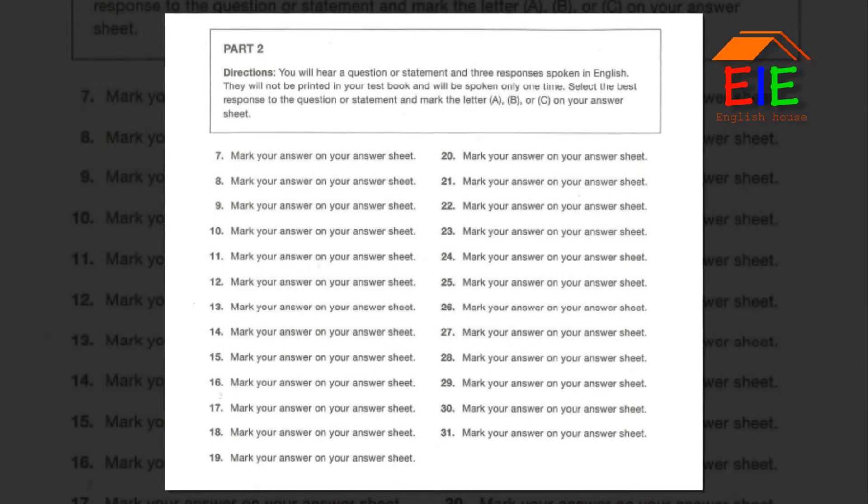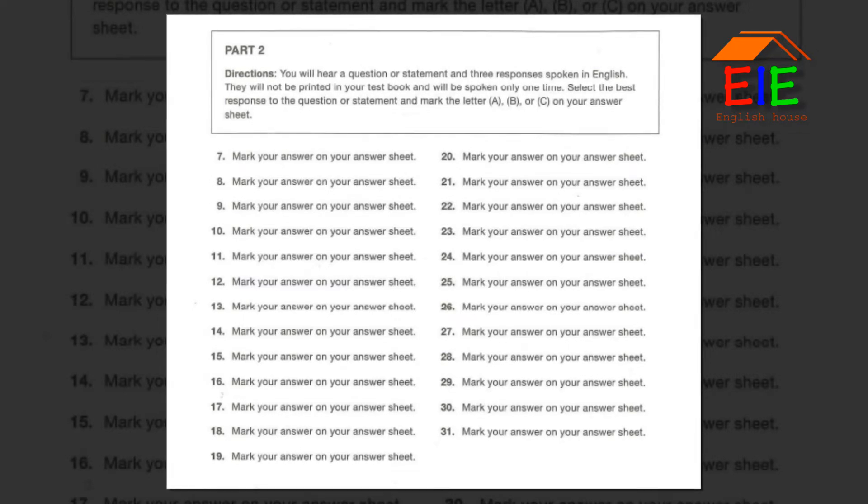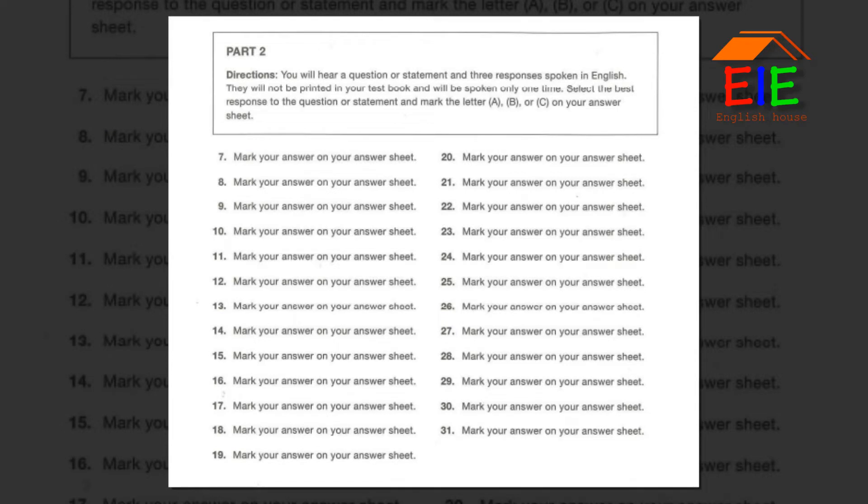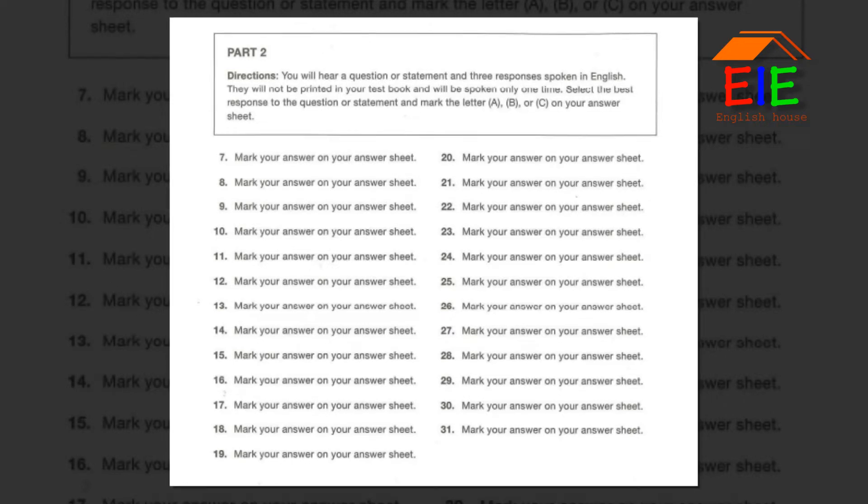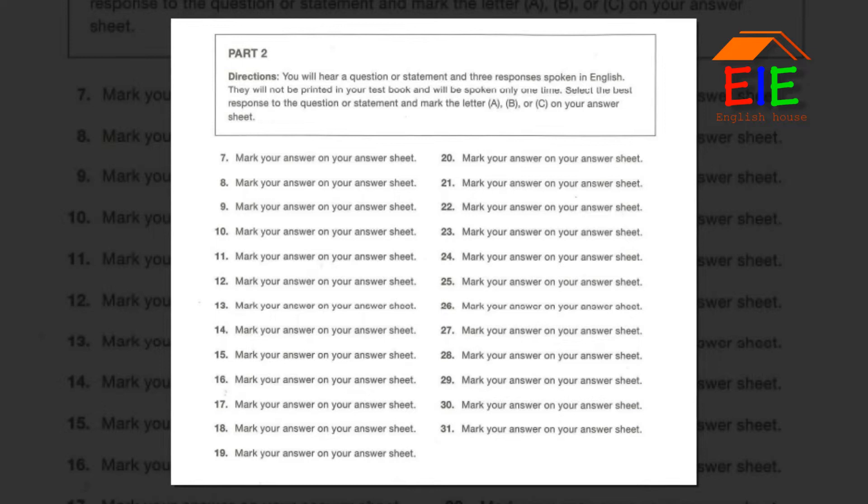Part 2. Directions. You will hear a question or statement and three responses spoken in English. They will not be printed in your test book and will be spoken only one time. Select the best response to the question or statement and mark the letter A, B, or C on your answer sheet. Now, let us begin with question number 7. Number 7. Which restaurant did Mayumi recommend? A. I don't think so. B. Dinner at 8 o'clock. C. The French one.